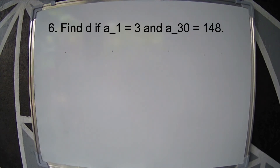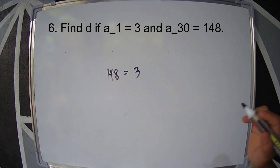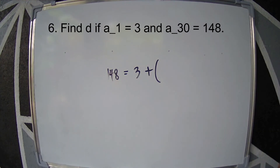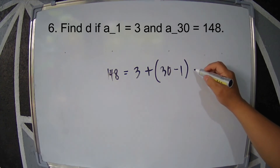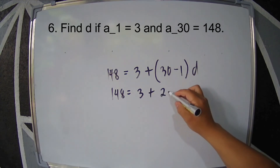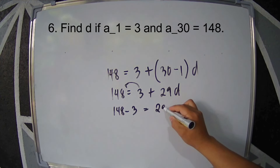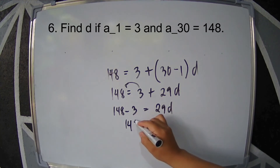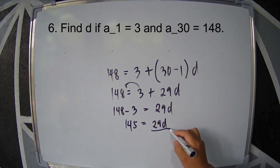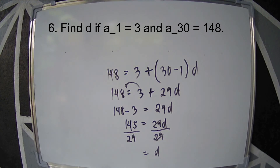Example 6: Find D if a sub 1 is 3 and a sub 30 is 148. Substituting into the formula: 148 equals 3 plus the quantity 30 minus 1 times D. So 148 equals 3 plus 29d. Move 3 to the other side: 148 minus 3 is 145, equals 29d. Divide both sides by 29: 145 over 29 is 5. Therefore, the common difference is 5.